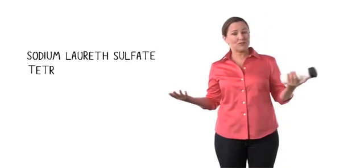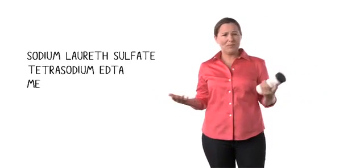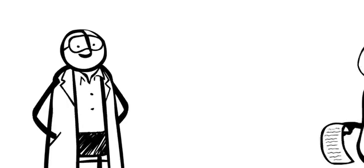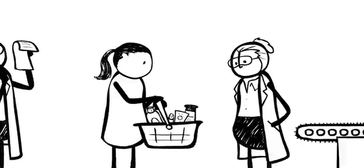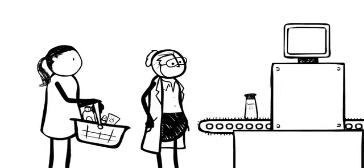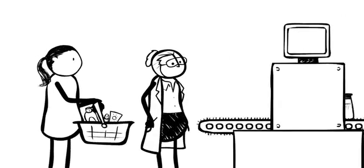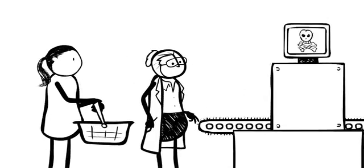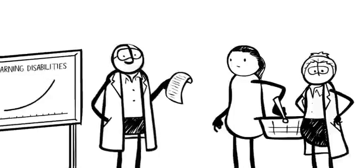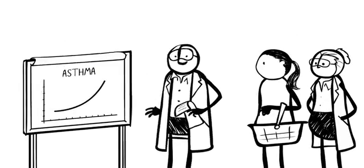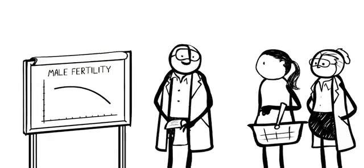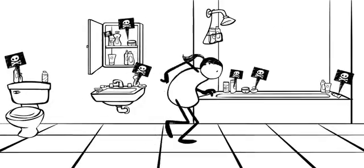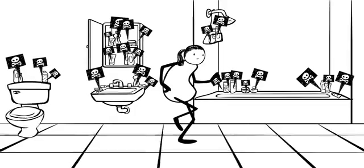Sodium Laureth Sulfate? Tetrasodium EDTA? Methylisothiazolinone? What is this stuff? I took this list to some scientists who know how to read it. Turns out my Pantene contains a chemical linked to cancer. And lots of other products in my bathroom, from sunscreen to lipstick and even baby shampoo, also contain chemicals linked to cancer or other problems like learning disabilities, asthma, and even damaged sperm. Like most parents, I try to keep my family safe. But now I find out my bathroom is a minefield of toxins? What are we supposed to do?